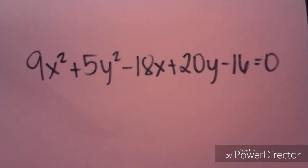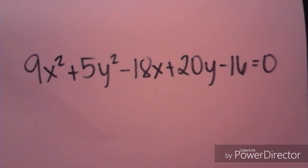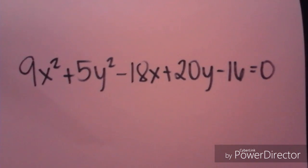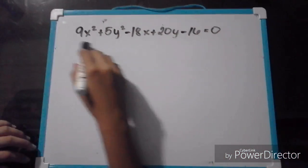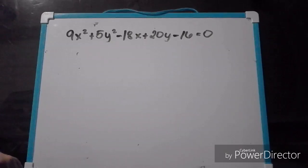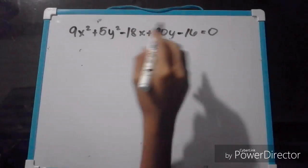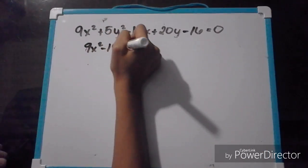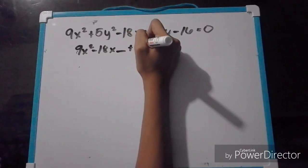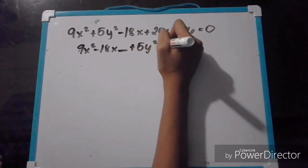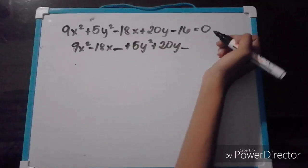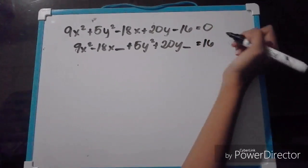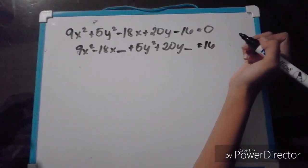Now we will change 9x squared plus 5y squared minus 18x plus 20y minus 16 equals 0 to its standard equation. We will group all the x's and y's together, so it will be 9x squared minus 18x, plus 5y squared plus 20y, leaving a space, then move negative 16 to the other side so it will be equal to 16.